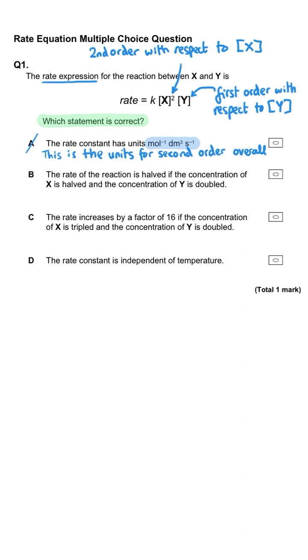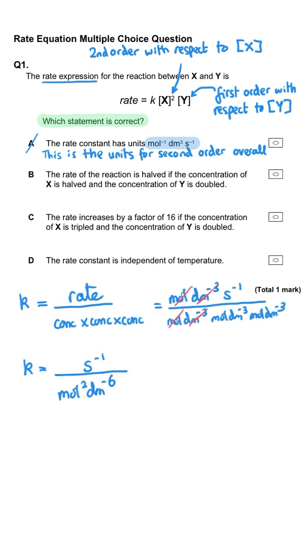No, that's not correct. A third order overall reaction has the units of mol⁻² dm⁶ s⁻¹ for the reasons I'm showing here with the cancelling out of the rearranged k expression.